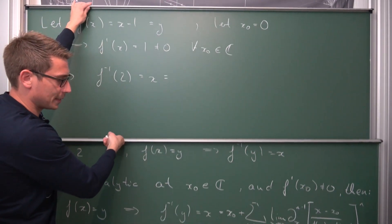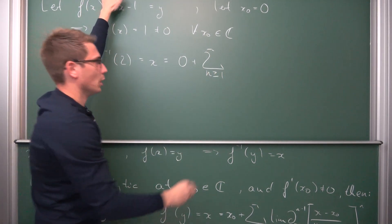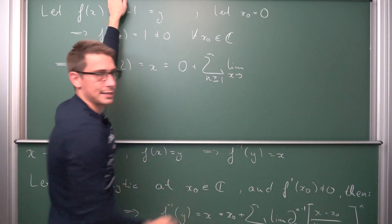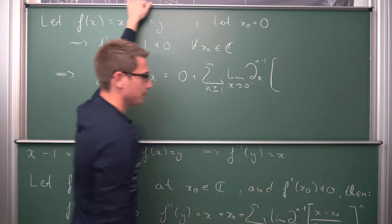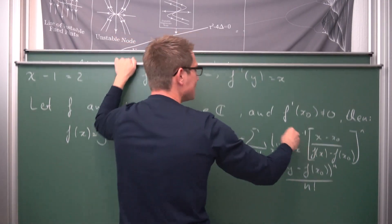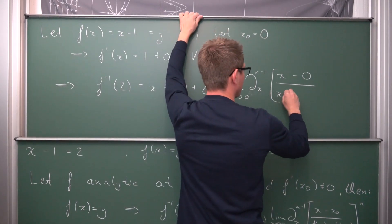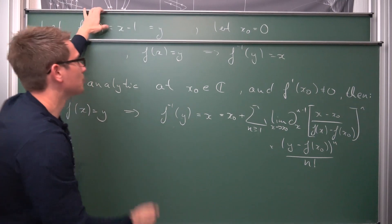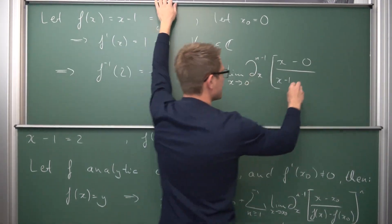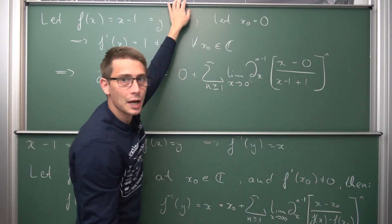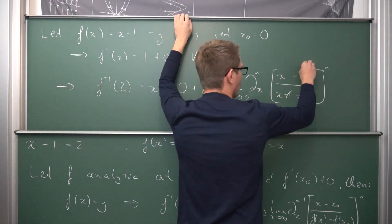By the Lagrange inversion theorem, with x₀ = 0, we get f⁻¹(2) = x₀ + Σ (n ≥ 1) of the limit as x → 0 of the (n−1)-th derivative of: (x − 0) divided by (f(x) − f(0)) = (x − 0) / (x − 1 − (−1)) = x / x = 1, all raised to the n-th power. So 1ⁿ = 1 throughout. Then the remaining factor is (y − f(x₀))ⁿ / n! = (2 − (−1))ⁿ / n! = 3ⁿ / n!. A lot of stuff vanishes beautifully.